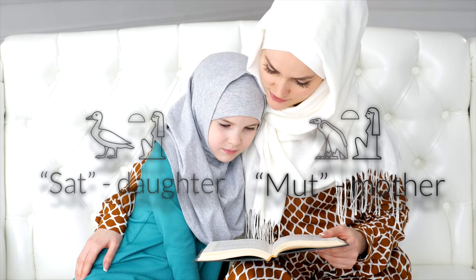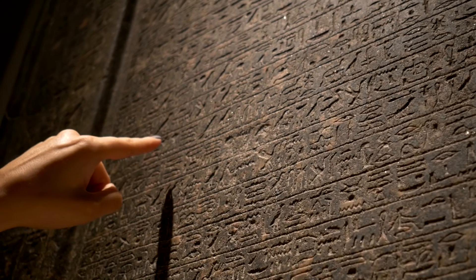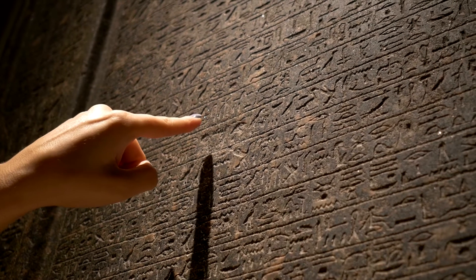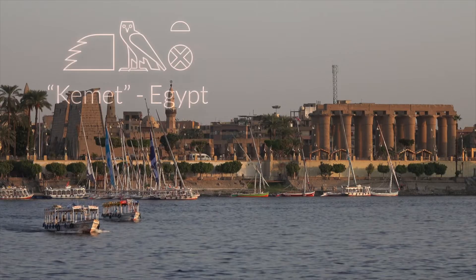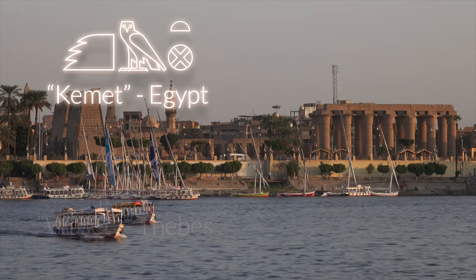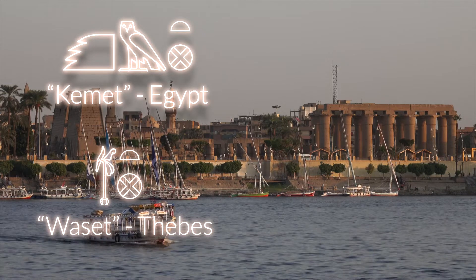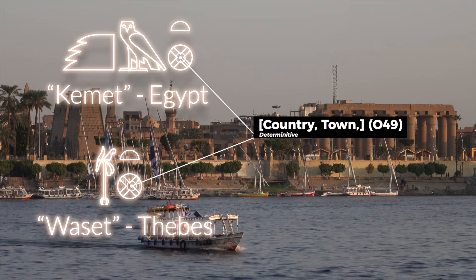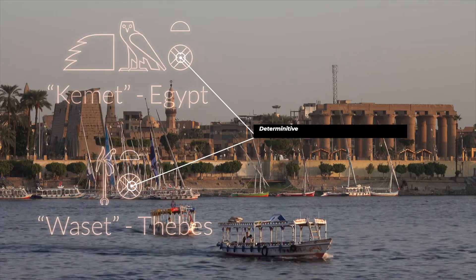Words that are neither feminine nor masculine actually take a feminine ending. An example of this can be seen in the ancient Egyptian word for Egypt, kemet, and also in the ancient Egyptian word for Thebes, waset. Both words end in a T, and the generic determinative which indicates that this word is associated with town, village, or country.